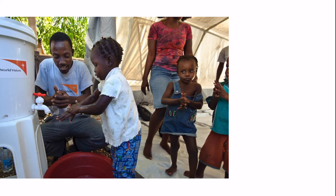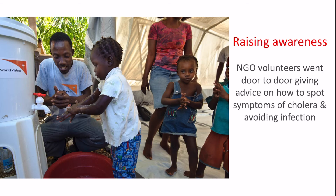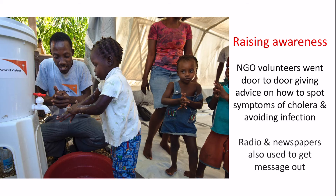Another significant action was raising awareness. Volunteers from the charity went door to door, telling Haitians how to spot cholera and avoid infection. They also spread this message via newspapers and radio, so people could recognise their own symptoms and try to mitigate the disease themselves.